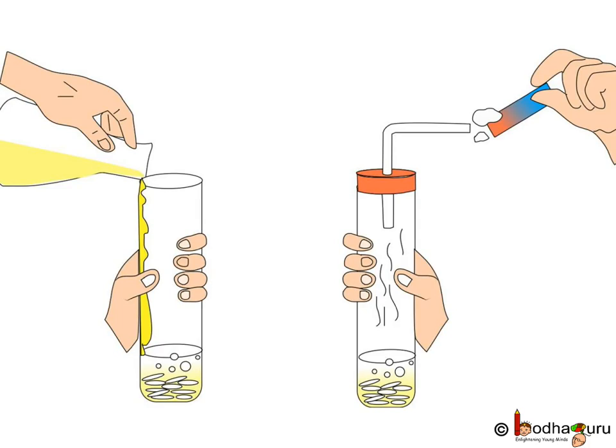We take around 1 gram NaCl, that is common salt, in a dry test tube. Now we add some concentrated sulphuric acid to it. This will produce hydrogen chloride gas. Now if we test it with dry litmus, it would not make any change in the color.